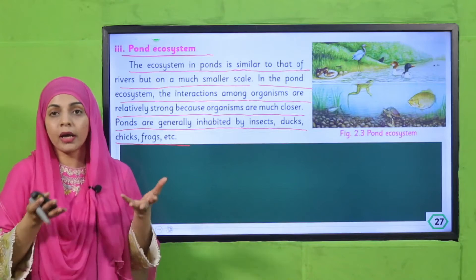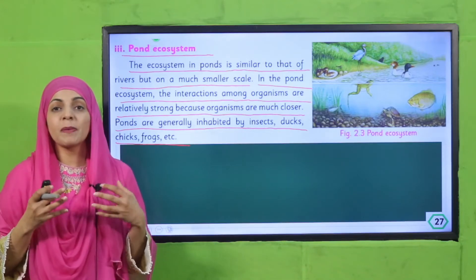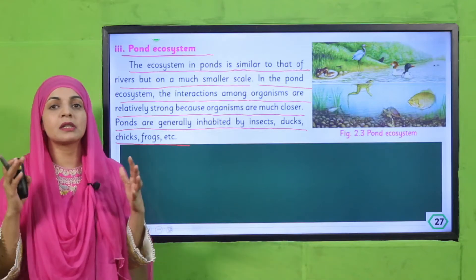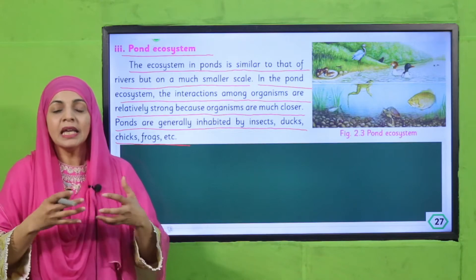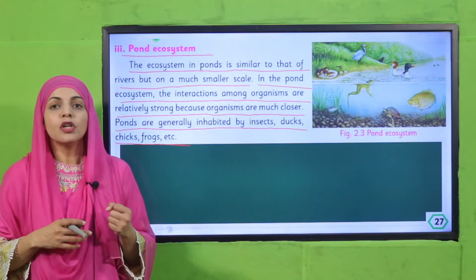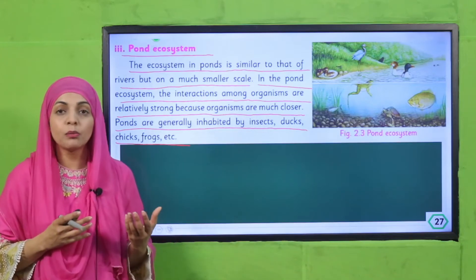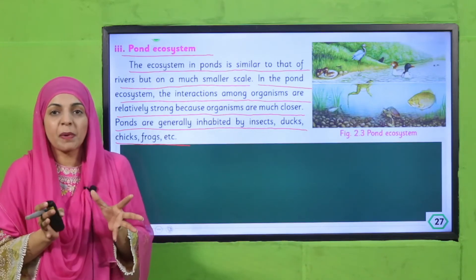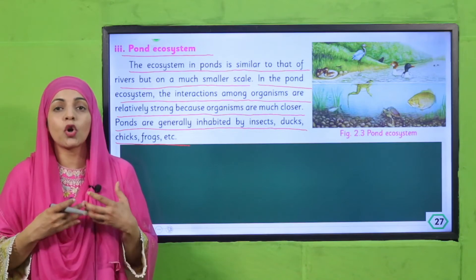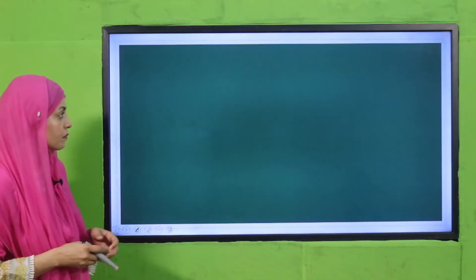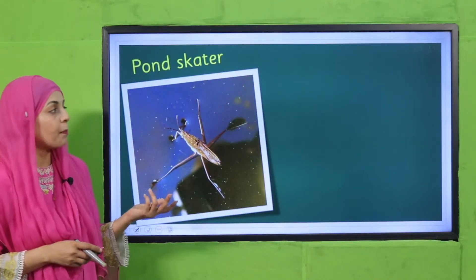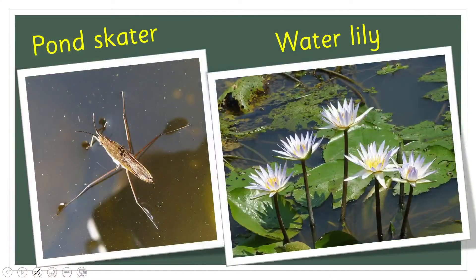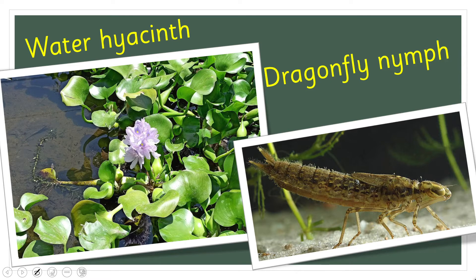The larger the space, the harder it is to connect, and the smaller the space, the easier the connection and the stronger the interaction. Pond skater, water lily, dragonfly nymph, and water hyacinth are all inhabitants of the pond.